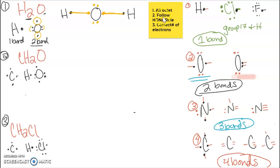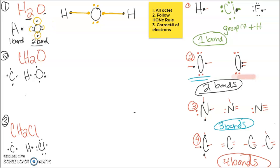Does it follow the HONK rule? Each hydrogen has a single bond, so yes. Does oxygen have two bonds? One and two — yes, two bonds for oxygen. And the correct number of electrons: two hydrogen give two electrons, oxygen gives six, so there should be a total of eight valence electrons. Counting: one, two, three, four, five, six, seven, and eight — yes, it has the correct number of electrons.